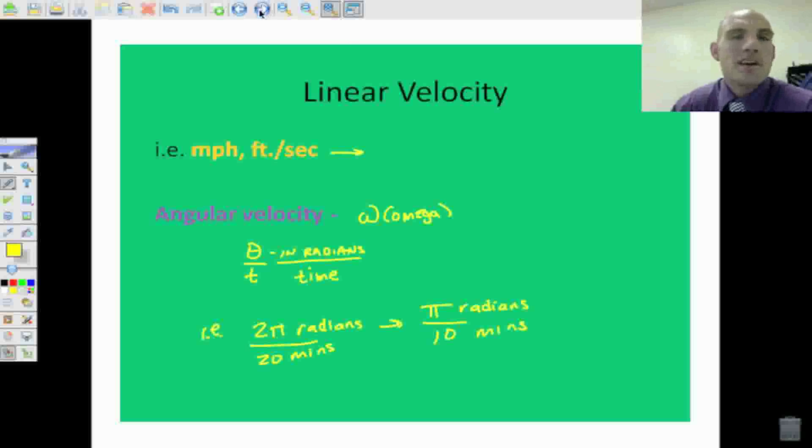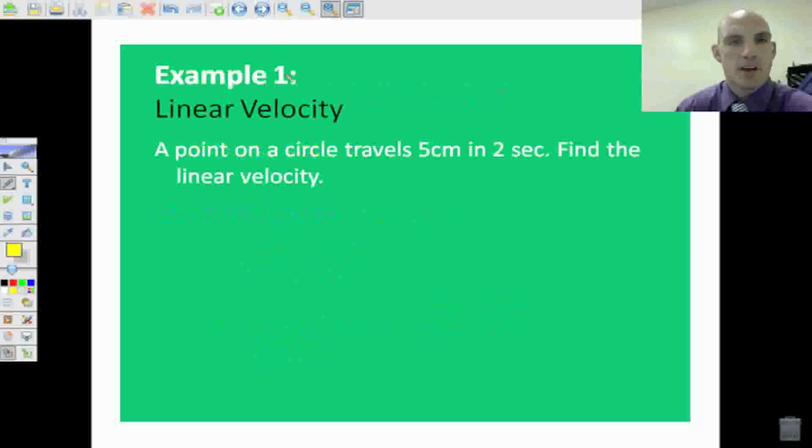So we need to know a couple of basic things and then we can go. In example one, we're going to find a point, let's say a point on a circle travels five centimeters in two seconds, find the linear velocity. Well, how far does it travel? Five centimeters. How long does it take it to travel there? Two seconds. So it's going to be 2.5 centimeters per second. That's it. That's linear velocity.